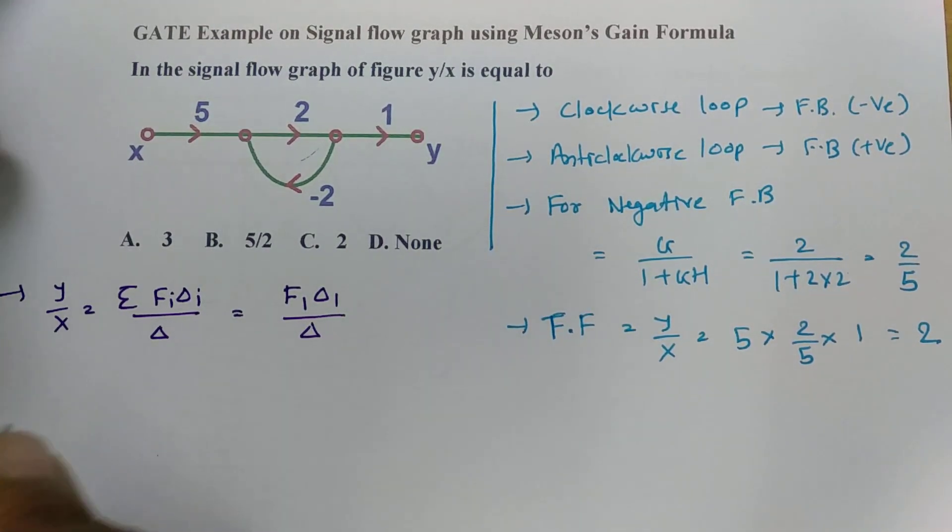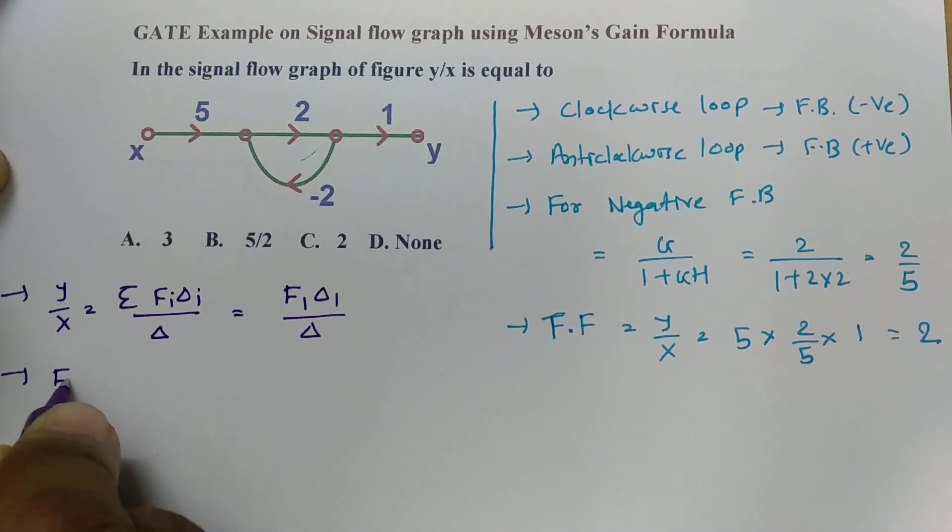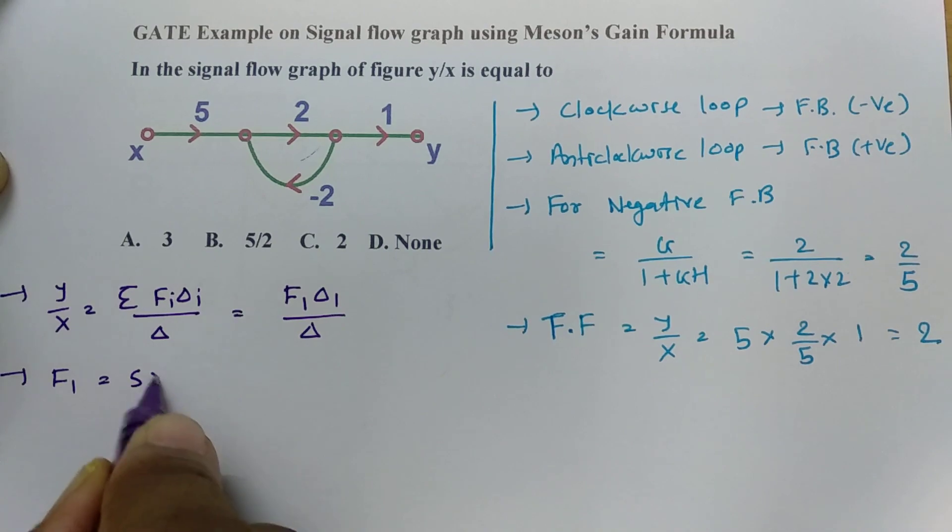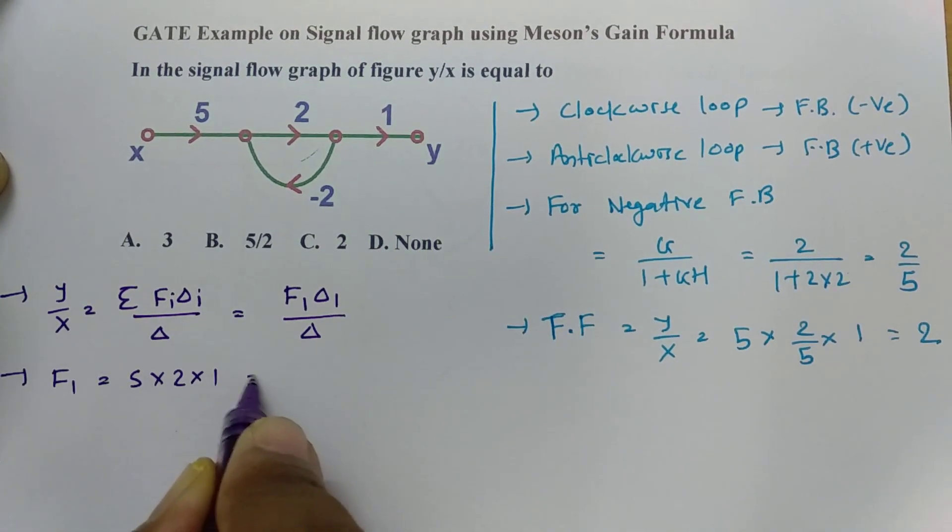So here if you calculate F1, that is just 5 into 2 into 1. So it is 5 into 2 into 1, it is 10.